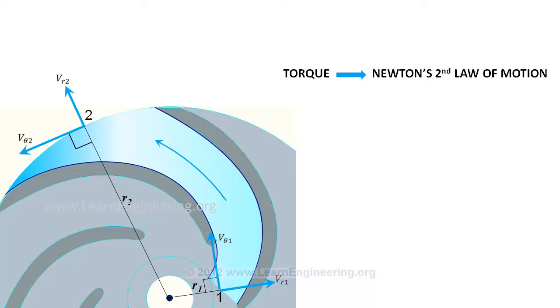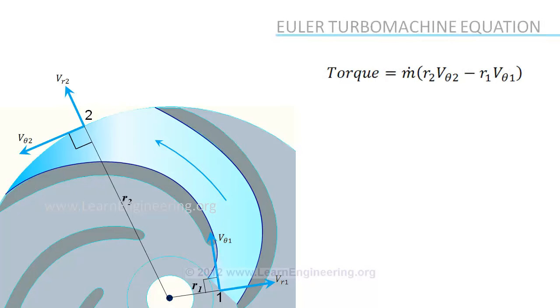The torque is given by this equation, which is also called as Euler Turbomachine Equation. The most important equation in turbomachinery.